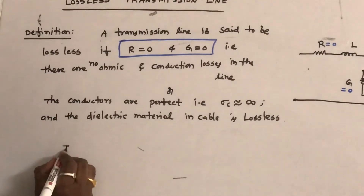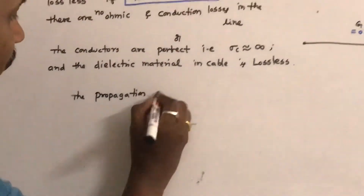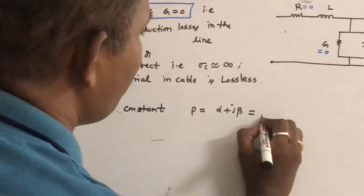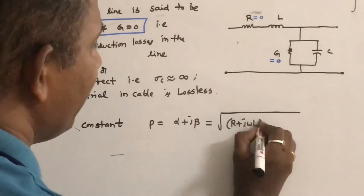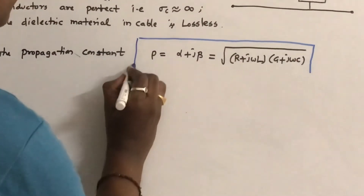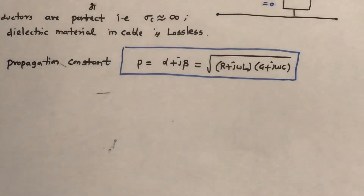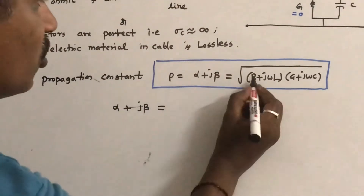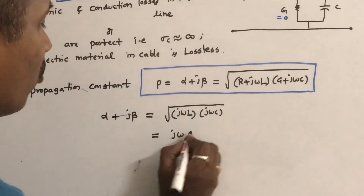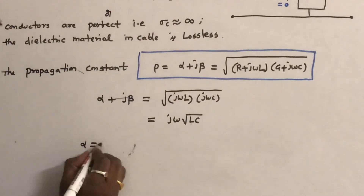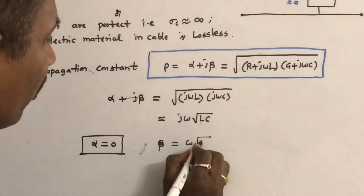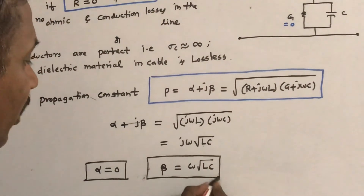The propagation constant, represented by γ, is equal to α plus jβ. The formula is γ = √(Z·Y) = √((R + jωL)(G + jωC)). For the lossless line, substituting R = 0 and G = 0, we get α + jβ = √(jωL · jωC) = jω√(LC). Comparing real parts, α = 0, meaning no attenuation losses. Comparing imaginary parts, the phase shift constant β = ω√(LC).